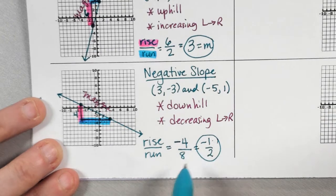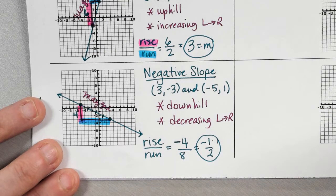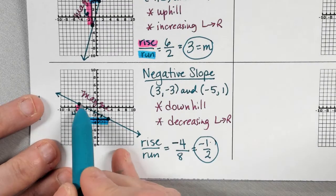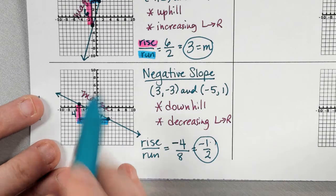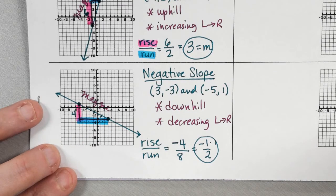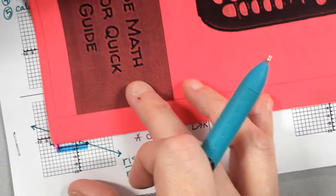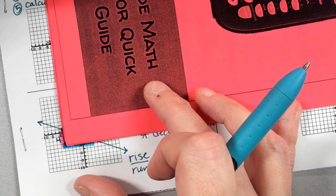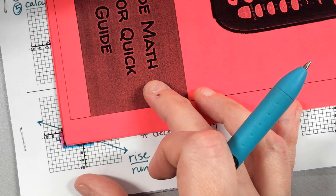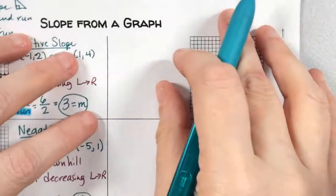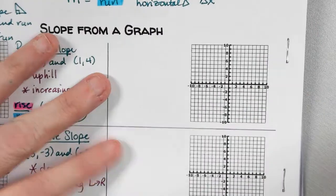If you put 0.5, you're going down half and over one — that's harder to use. The fraction gives me directions: vertically I move negative one, horizontally I move two. That gives me the directions to find the next point on the line. If you're having trouble making the triangle, take the edge of something, line it up with the two points — that's where your triangle should go, making a right triangle with the points at the ends of the legs.